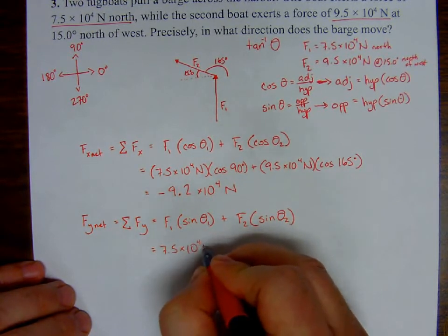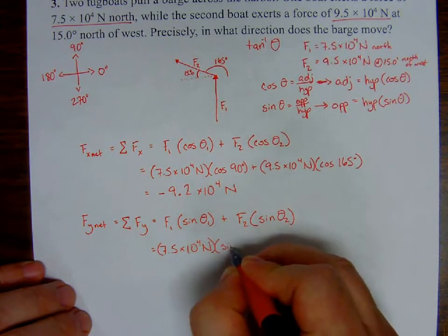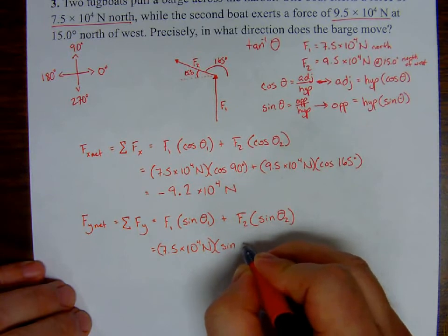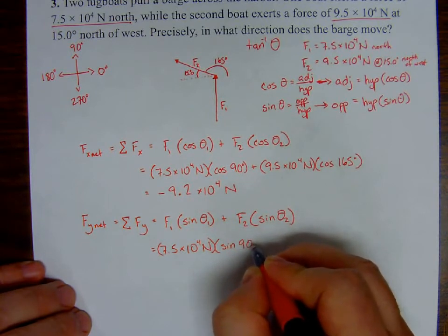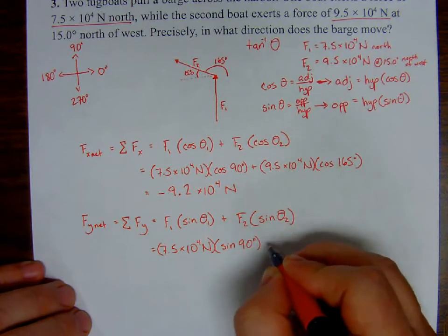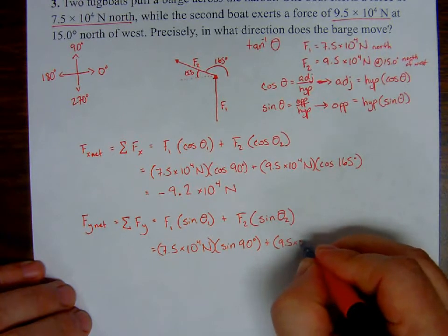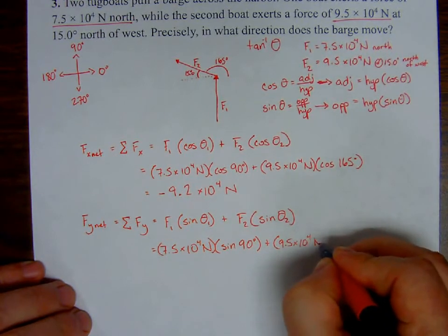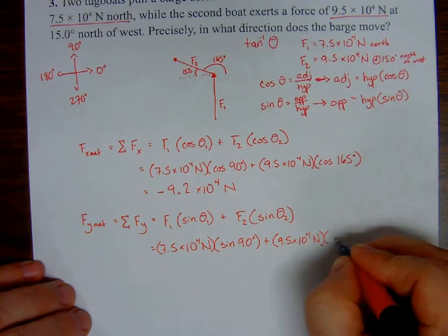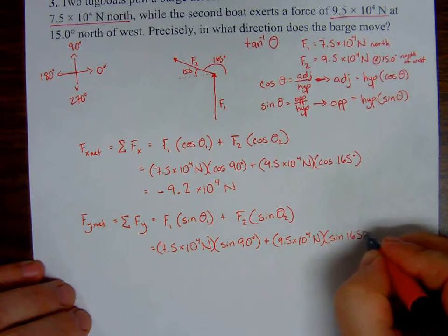Again, put a whole bunch of stuff into the calculator. That's actually going to end up being, let's see, 10. I'm going to need two significant figures, so I'll write it like that: 10 times 10 to the 4th Newtons. So I have my X component and my Y component.